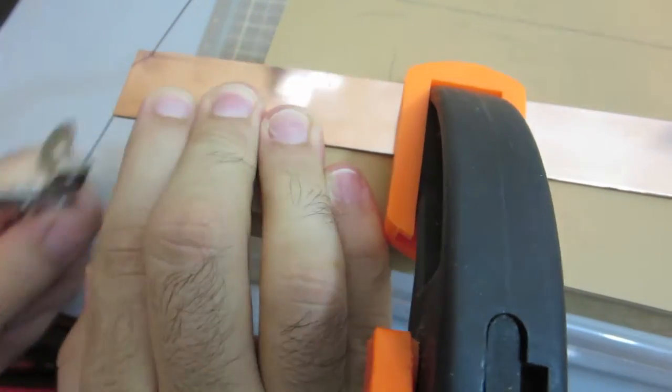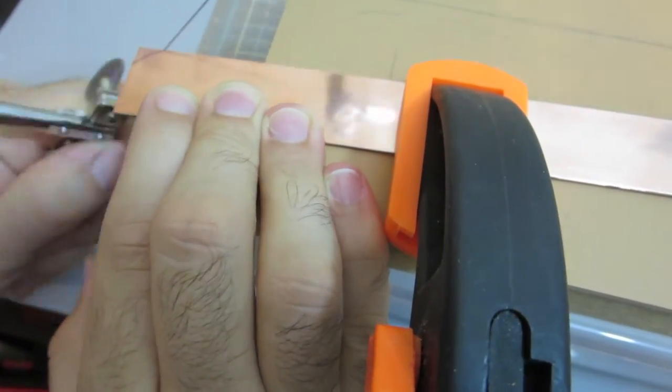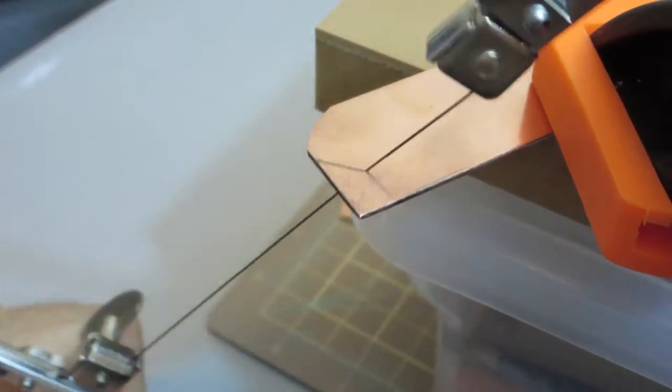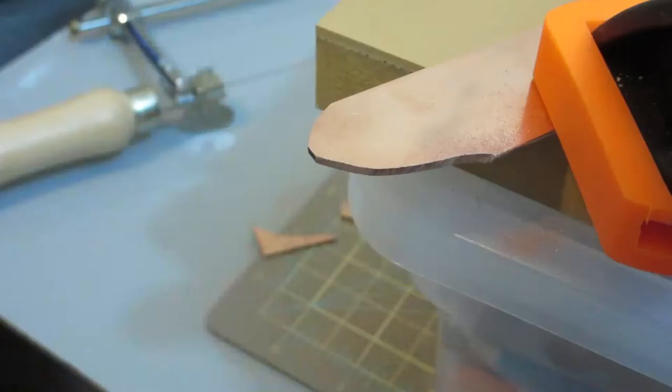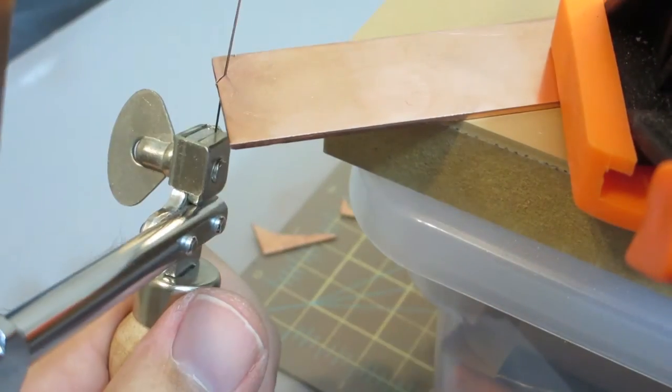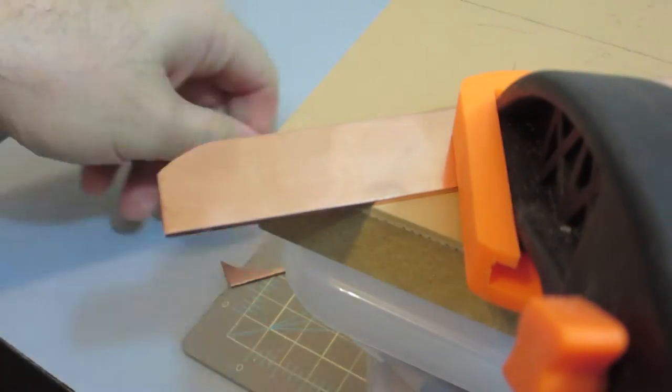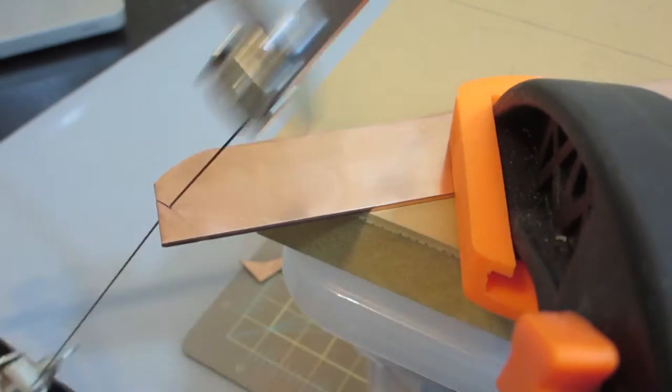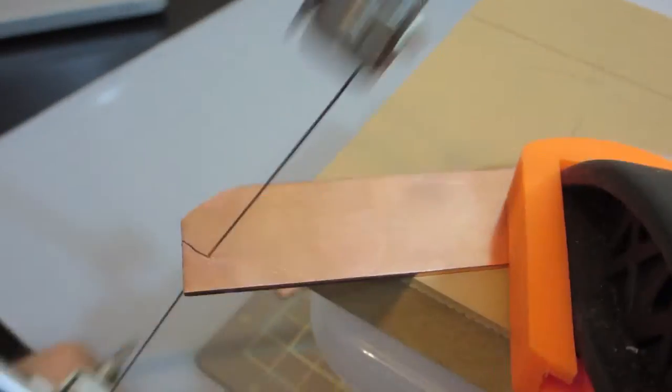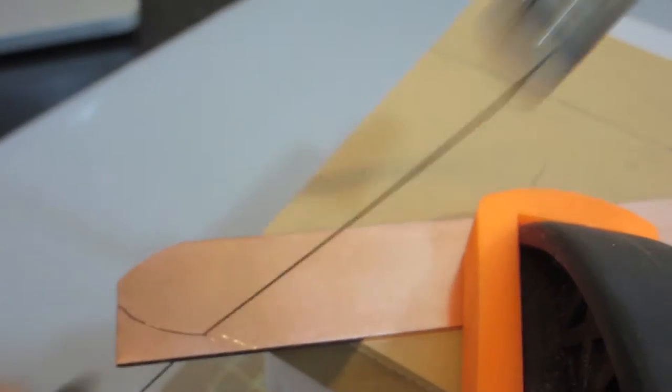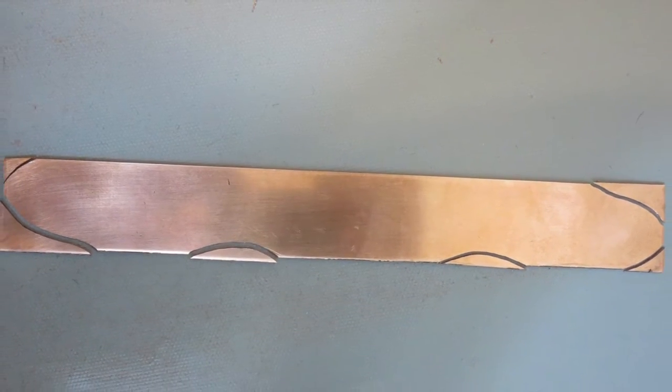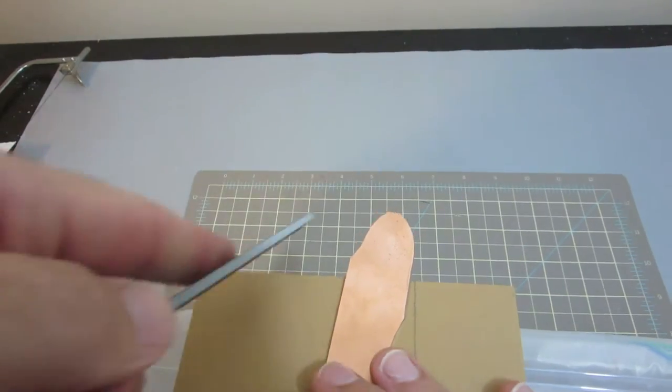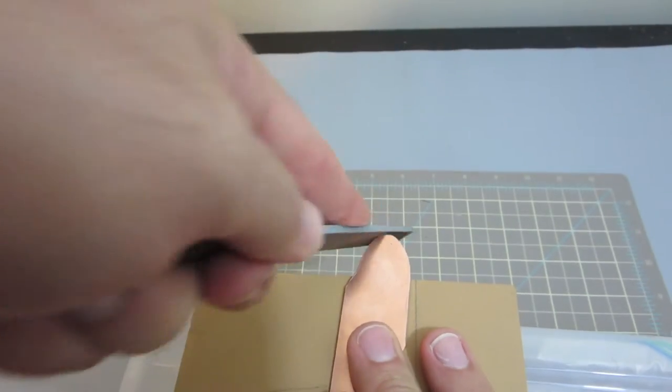Cutting the copper left some nasty sharp jagged edges, so before I could start using the mezzotint rocker, I had to clean them up a bit or chip all sorts of teeth off on the rocker.